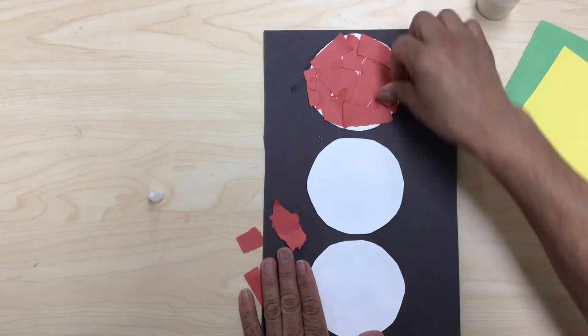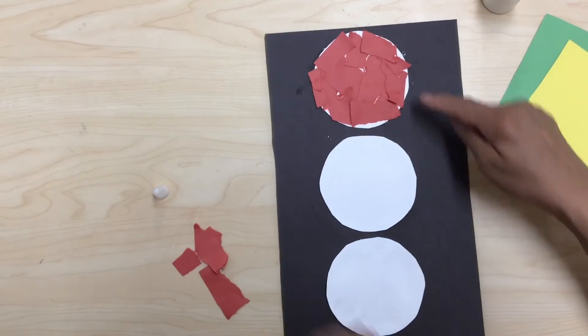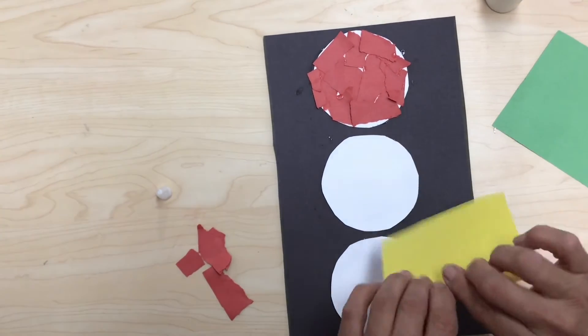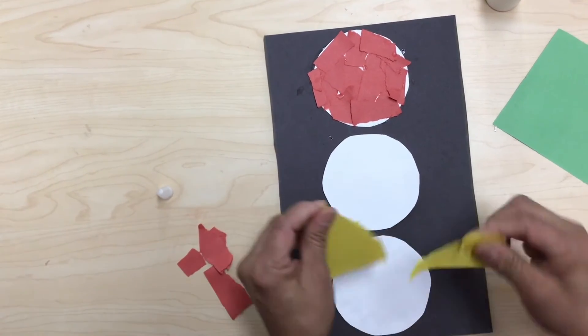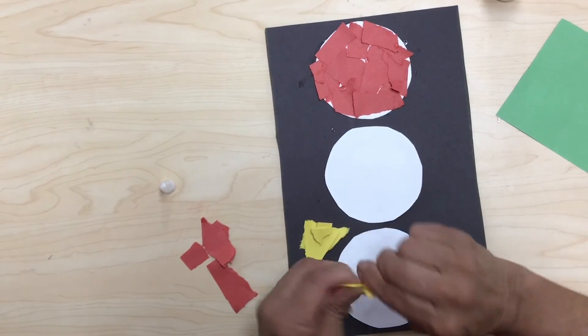There you go! You gotta press hard. That's my red light. So after my red light comes the yellow, so I keep ripping and ripping until I finish ripping all my squares.